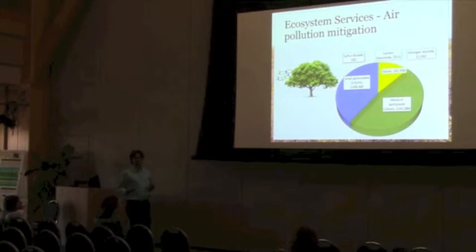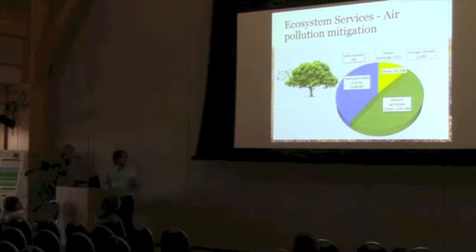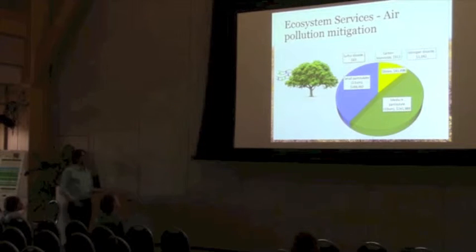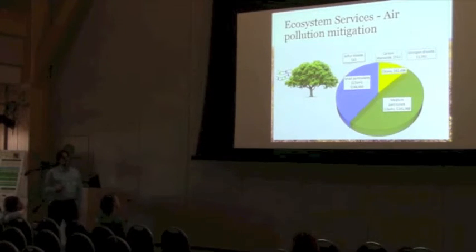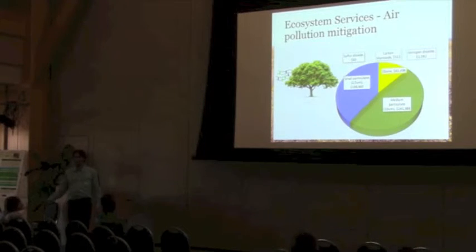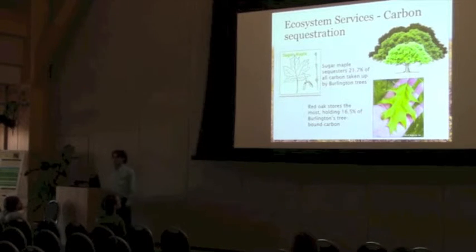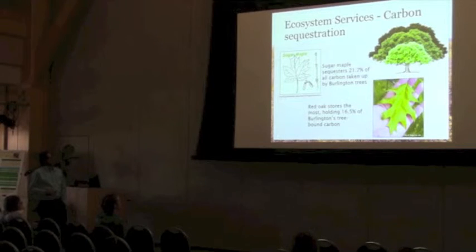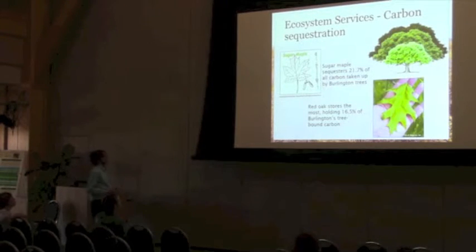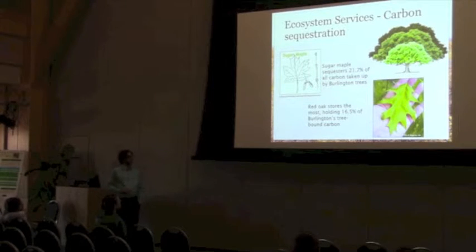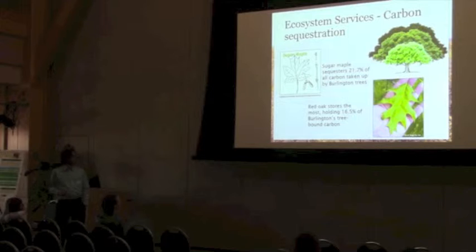The nice thing about ITREE ECO is that once you have the survey data, you can run it through their analysis servers to get estimates of ecosystem services. They can supply dollar values based on national averages. You can get a custom report for your city of how much air pollution is being mitigated by trees in Burlington — an estimated value of deferred health effects, such as reduced asthma cases from particulate removal. Carbon sequestration is also an important role trees play. Sugar maples may be taking out almost a fifth of the carbon Burlington's trees absorb, and red oak stores the most, holding 16% of the city's carbon based on current estimates.